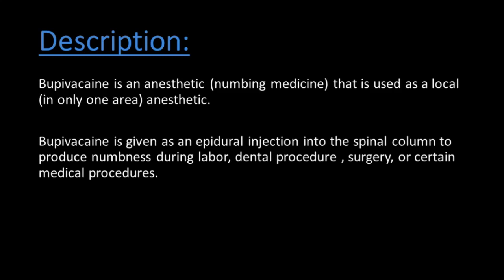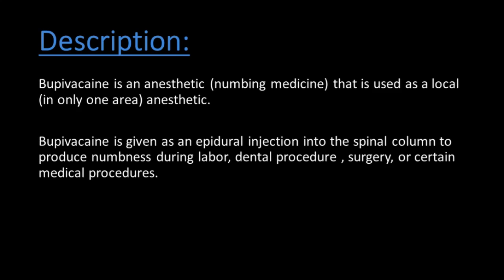Bupivacaine is an anesthetic numbing medicine used as a local anesthetic in only one area. It is given as an epidural injection into the spinal column to produce numbness during labor, dental procedures, surgery, or certain medical procedures. Available forms: spinal injection 0.5% per ml, also 0.25% per ml. Volumes available: 2 ml, 4 ml, 10 ml, and 20 ml.